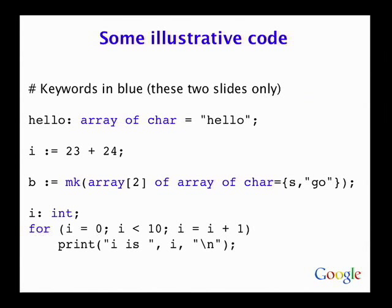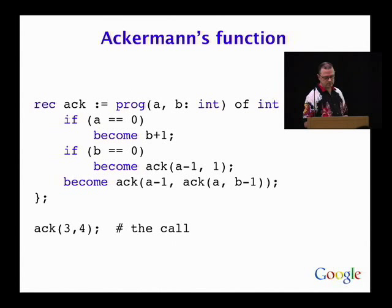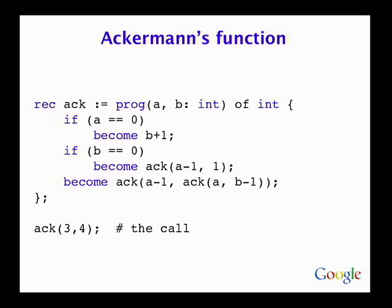Here's Ackermann's function, just so you see what a function looks like. There's a keyword 'rec' which means recursive — it allows you to define a block in which variables can refer to one another, so if you're defining a recursive function you need the rec keyword. This keyword 'prog' — think of that as lambda. And 'become' — think of that as being like return, but with different properties. If you change 'become' to return and 'prog' to function, you can read it as a regular Ackermann's function definition.